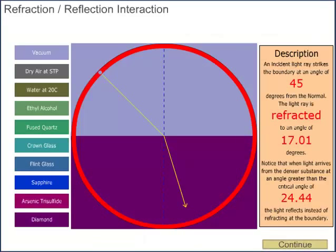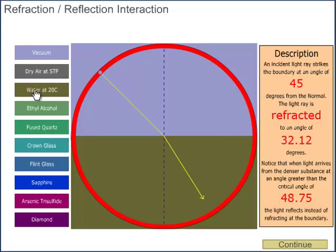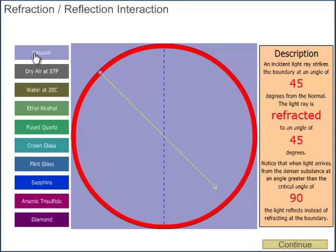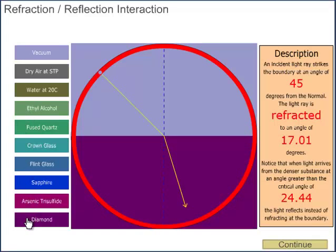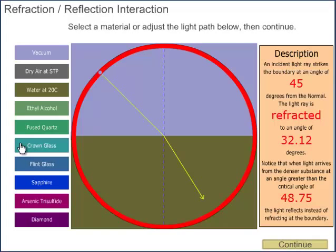Refraction occurs when light waves travel from a medium with a given refractive index to a medium with another. At the boundary between the media, the wave's phase velocity is altered — it changes direction, and its wavelength increases or decreases, but its frequency remains constant. For example, a light ray will refract as it enters and leaves water. This concept led to the invention of lenses and the refracting telescope. Some of the light penetrates into the second material and is refracted, and the rest is reflected back into the first material.